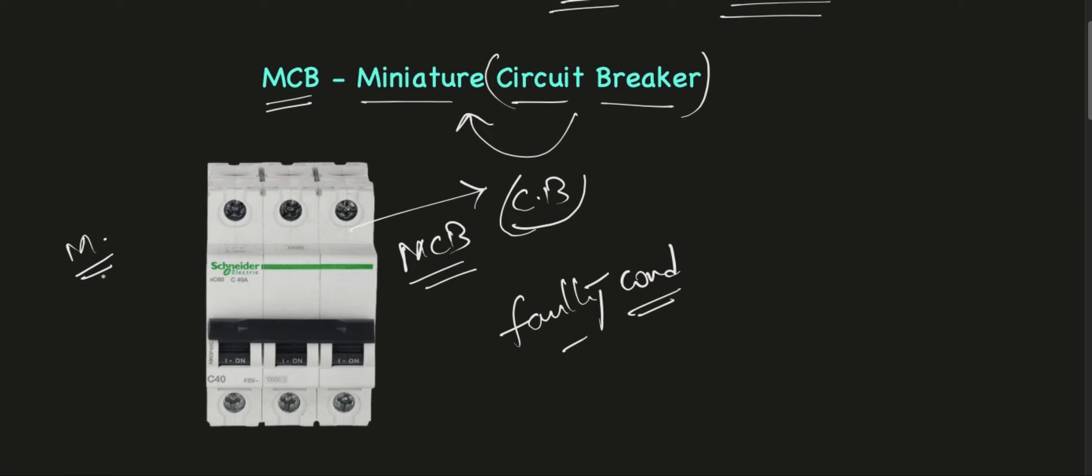As it's a miniature form of a circuit breaker, the rating of this is limited. The ampere rating is below 100 amps. If a system is drawing below 100 amps we use an MCB to protect the circuit. If the system is drawing more than 100 amps we do not use an MCB.